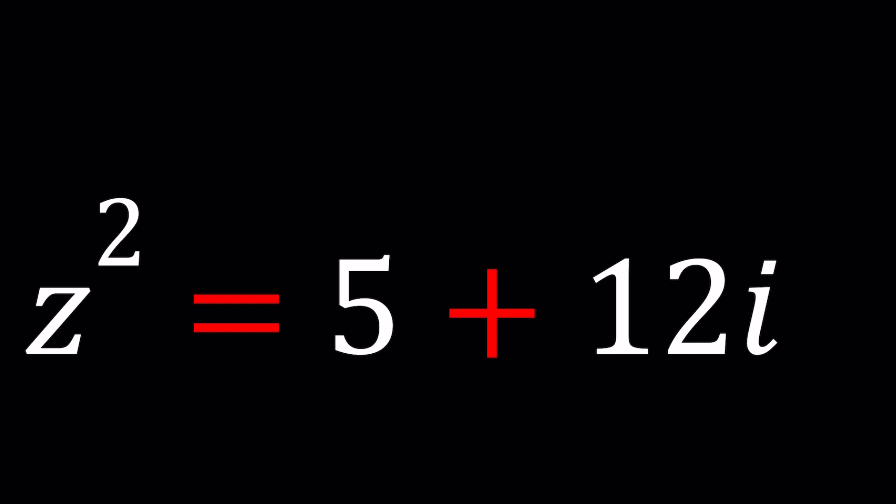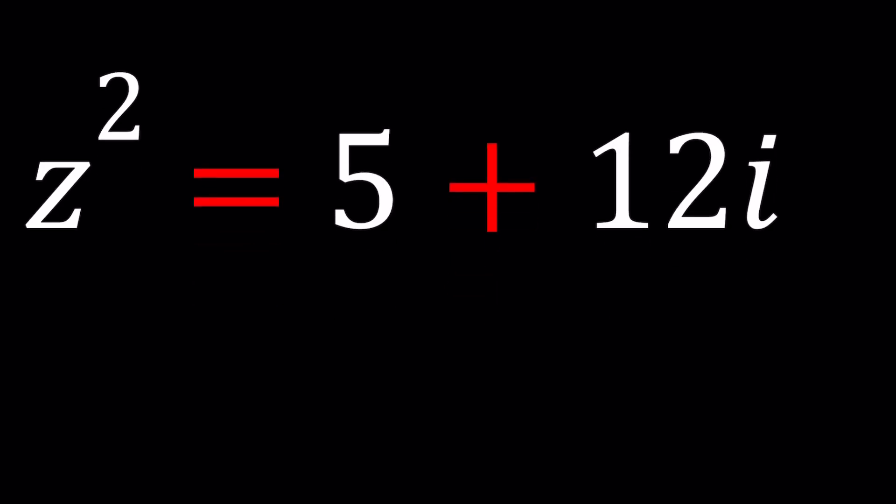We have an equation z squared equals 5 plus 12i, and we're going to find the values of z for which this equation is true. There are two z values because if z is a solution, then negative z is also a solution. I'll be presenting three methods and let's get started.